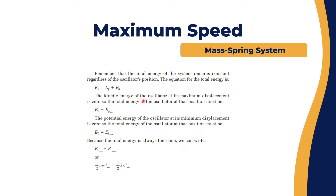The potential energy at the minimum displacement is zero, so the total energy there would be E_total equals EK_max. Because the total energy is always the same in an isolated system, EK_max equals EP_max, or E_total at position one equals E_total at position two.